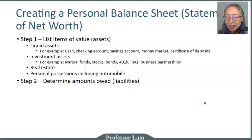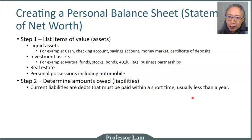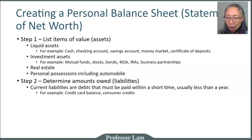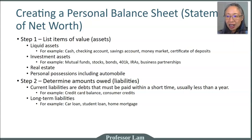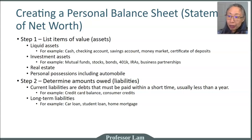Step two is listing your liabilities — how much you owe. This includes two major categories. The first is current liabilities, which are short-term, usually less than one year. Good examples are credit card balances and consumer credits — things like appliance purchases on a 12-month, 6-month, or 24-month plan. Then there are longer-term liabilities, typically two or more years, which include car loans, student loans, or a mortgage. Mortgages are typically 15 to 30 years, car loans 3 to 5 years, and student loans are often 5 to 10 years.